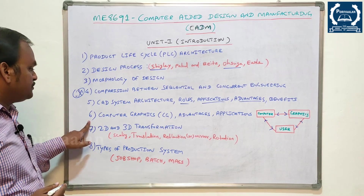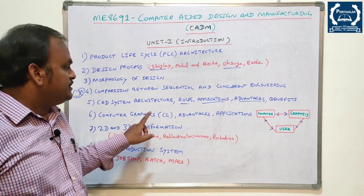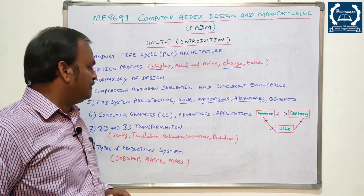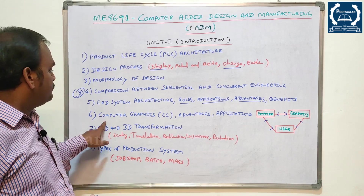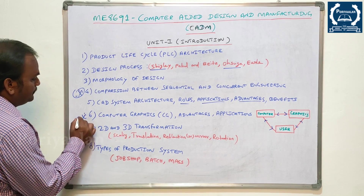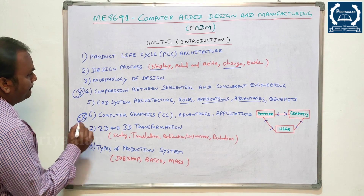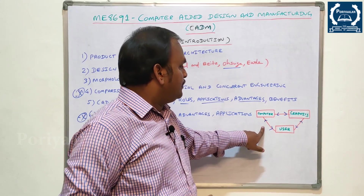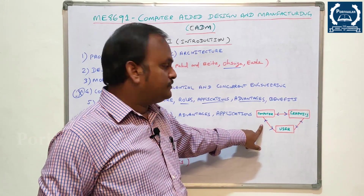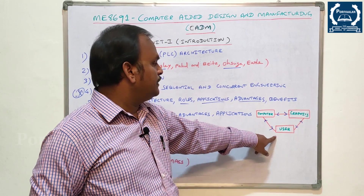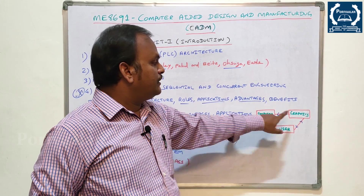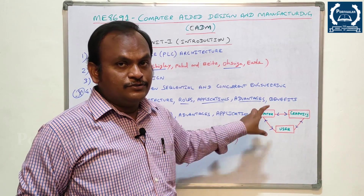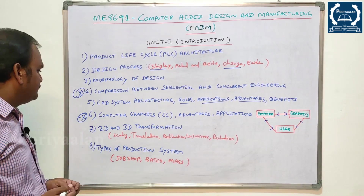The sixth question is Computer Graphics — CG. This covers advantages and applications. It is a very important topic. CG architecture involves three components: User, Computer, and Graphics.